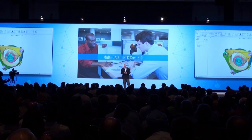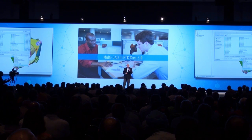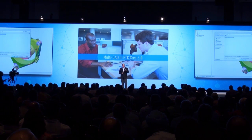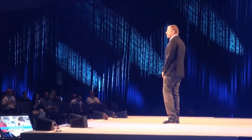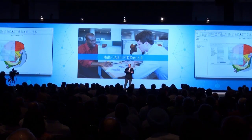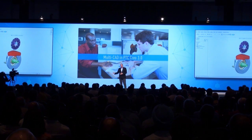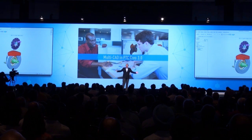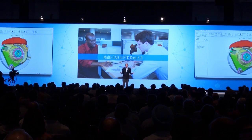Right out of the box with Creo 3.0, at no additional charge, you'll be able to use native files from all of the different major CAD systems — SOLIDWORKS, CATIA, and NX. There will be no Creo file created. You're not importing this information. There are no duplicate files to manage. Creo will expand its capabilities to allow you to work with data from those other systems as if they were natively Creo objects.